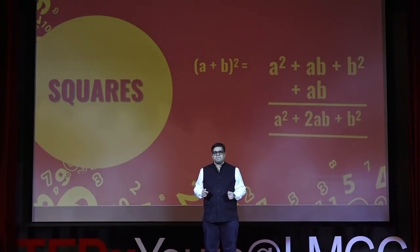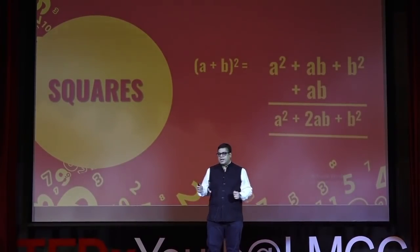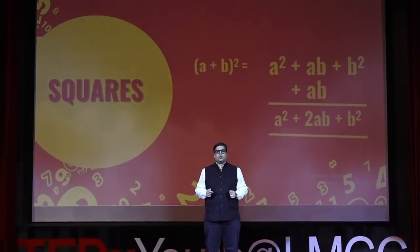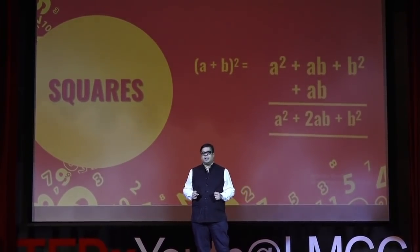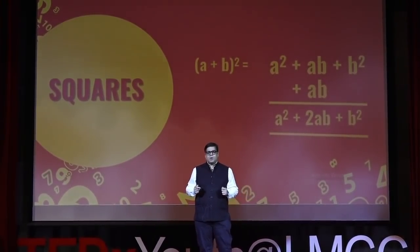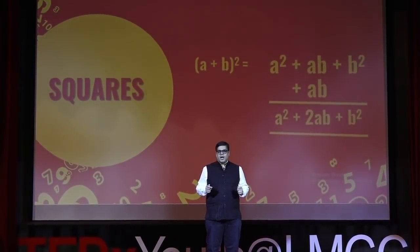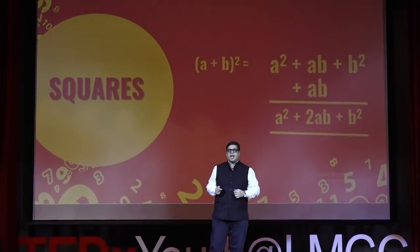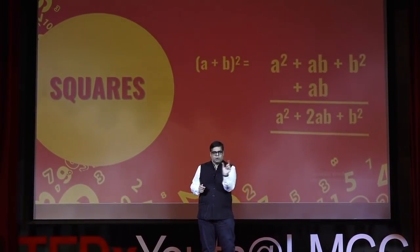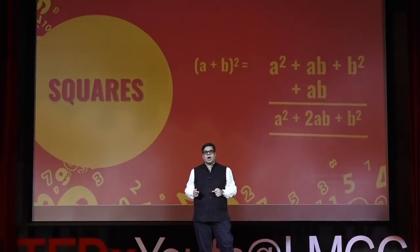Now, here's the key point: if you are at a² and you have to multiply to get aB, what would you multiply a² with? B/a. And from aB to B², you again multiply by B/a. So there's a constant ratio of B/a going all the way from a² to B². Let's take a sum now and see how exciting that becomes.